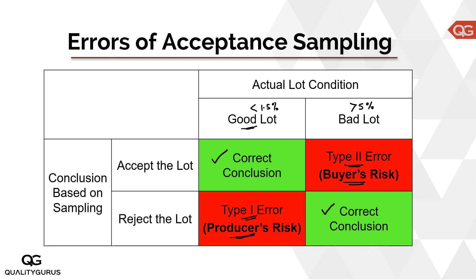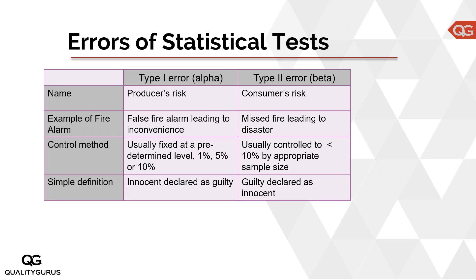Let's summarize in a table. Type 1 error is producer's risk, denoted as alpha (α). Type 2 error is consumer's risk, denoted as beta (β). Type 1 error is also called a false alarm — even though everything was fine, a false alarm was raised indicating the lot was defective, leading to the producer's risk.